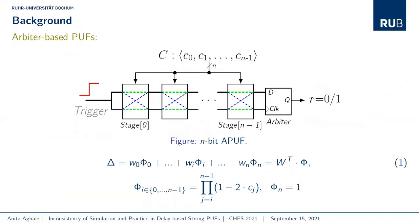One of the most common strong PUF primitives is the arbitral PUF, applied in many delay-based PUF architectures. As shown in the figure, the trigger signal passes through N stages controlled by challenge bits. An arbiter or flip-flop decides the final response depending on which delay line is faster. For successful PUF modeling, we need a proper PUF model. As shown in this equation, the commonly used linear delay model of the arbitral PUF contains a vector of weights representing the physical characteristics of each switch.